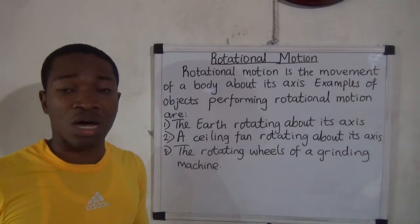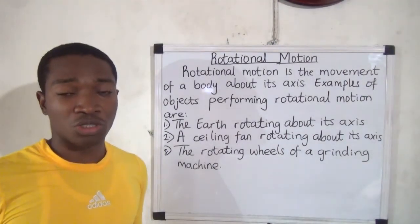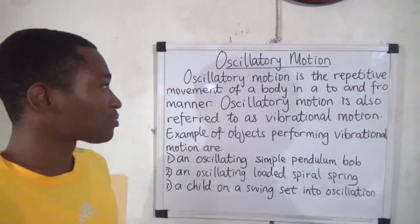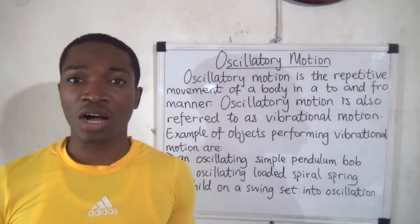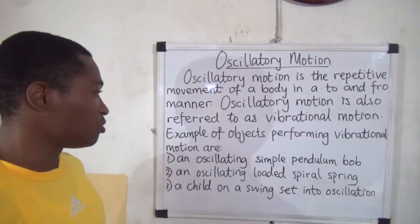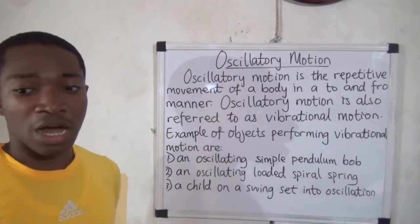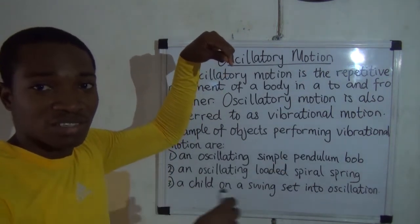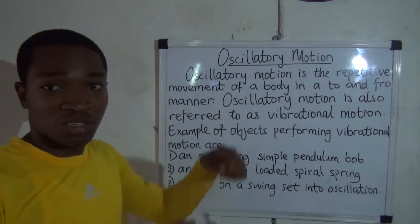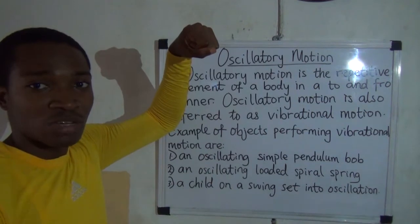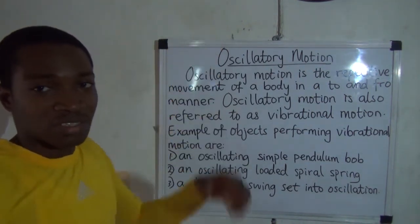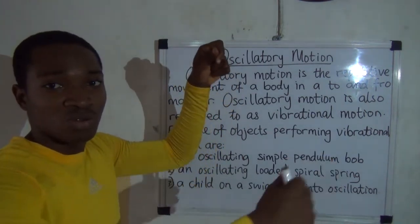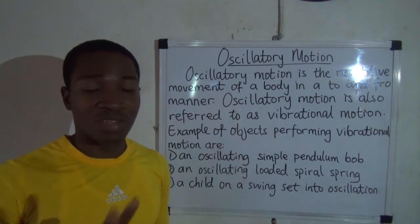The third type is oscillatory motion, also called vibrational motion — the repetitive movement of an object in a to-and-fro manner. Examples include an oscillating simple pendulum ball, where you tie a stone to a rope and let it swing; an oscillating loaded spiral spring, where you load a heavy object on a spring, pull the load, and release it so it begins to oscillate; and a charged string set into oscillation moving to and fro.